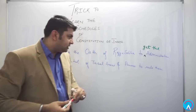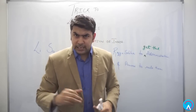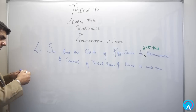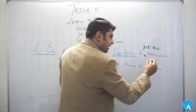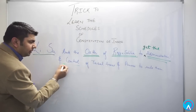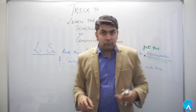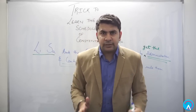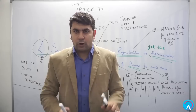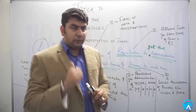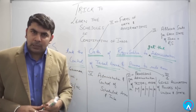The first trick to learn the schedules of the Constitution is about a person named Lisa. The punchline is: Lisa took the oath of Rajya Sabha seat to get the administration and control of tribal areas and powers to rule them. With this trick, you will be learning the first seven schedules in sequence.